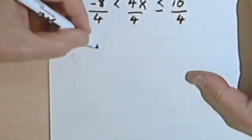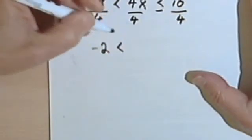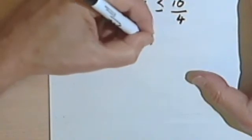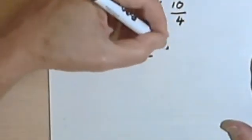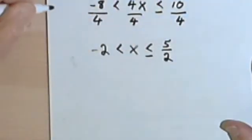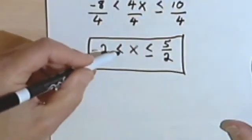I've got negative 8 over 4, that's the same as negative 2, is less than 4x over 4 is just x. I've got my less than or equal to sign, and 10 over 4 can be simplified into 5 over 2. So this is what my answer will be using the inequality symbols.